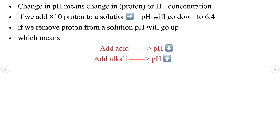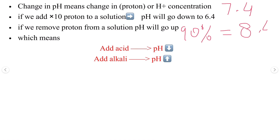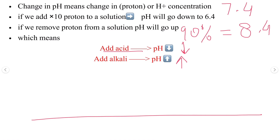Changes in pH mean changes in proton or hydrogen ion concentration. For example, if a solution has a pH of 7.4 and we add 10 times more protons, the pH will go down to 6.4. If we remove protons — say 90% of them — the pH will go up to around 8.4. If we add acid, pH goes down; if we add alkali or base, pH goes up.